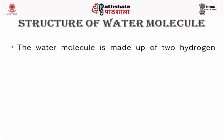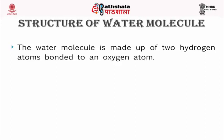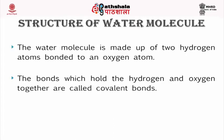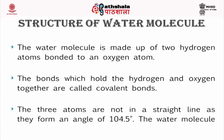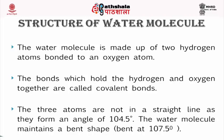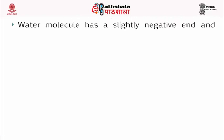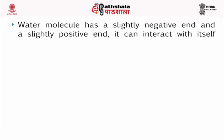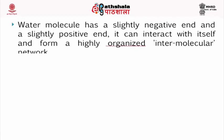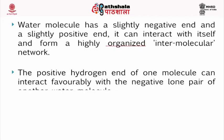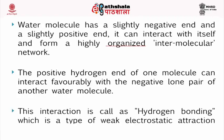Structure of water molecule: The water molecule is made up of two hydrogen atoms bonded to an oxygen atom. The bonds which hold the hydrogen and oxygen together are called covalent bonds. The three atoms are not in a straight line as they form an angle of 104.5 degrees. The water molecule maintains a bent shape of 107.5 degrees. The water molecule has a slightly negative end and a slightly positive end. It can interact with itself and forms a highly organized intermolecular network. The positive hydrogen end of one molecule can interact favorably with the negative lone pair of another water molecule. This interaction is called hydrogen bonding, which is a type of weak electrostatic attraction.